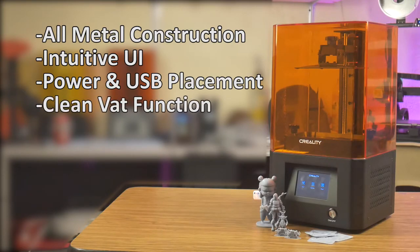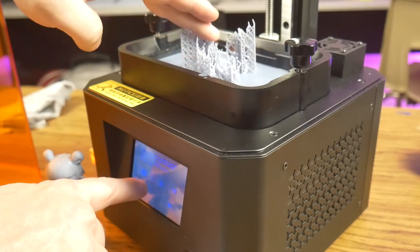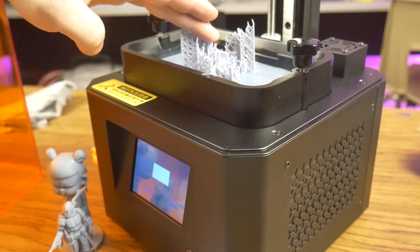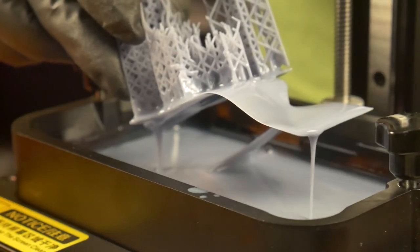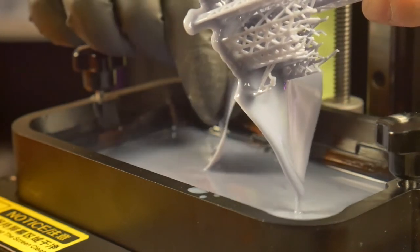Clean vat function. The LD-002R has a built in vat cleaning function which is useful if you have a failed print stuck to the bottom of the resin vat. What I do is place an old piece of support material in the vat, select the clean vat button, input the amount of exposure you'd like, tap the next button, and let it expose. Once complete, pull away the support material and a sheet of exposed resin will also pull away, taking with it any debris and failed print material along with it.